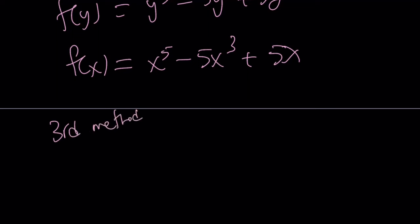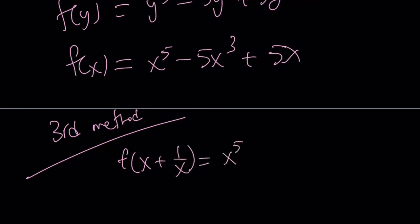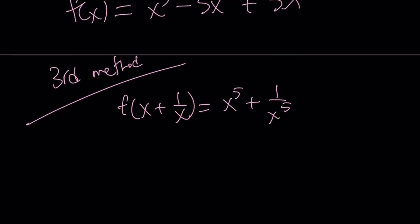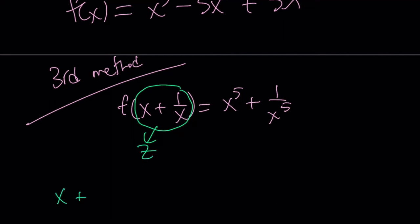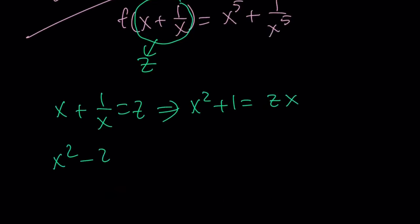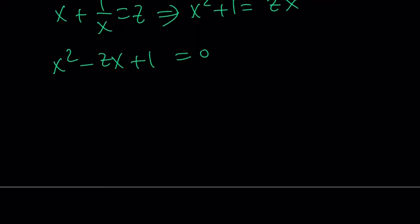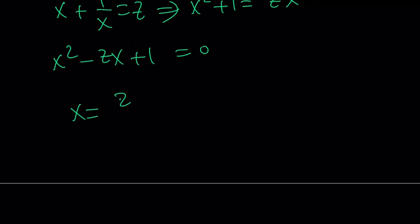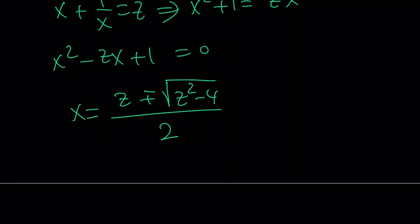My third method is quite different and was suggested by some viewers. We start with the same idea but proceed differently. Set x plus 1 over x equal to z. I'm going to solve this as a quadratic equation. Multiply both sides by x to get x squared plus 1 equals zx, then rearrange and solve the quadratic in x. x equals z plus or minus the square root of z squared minus 4, all divided by 2.